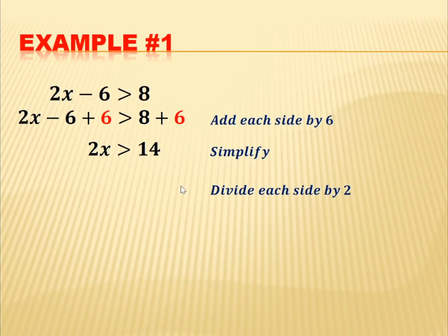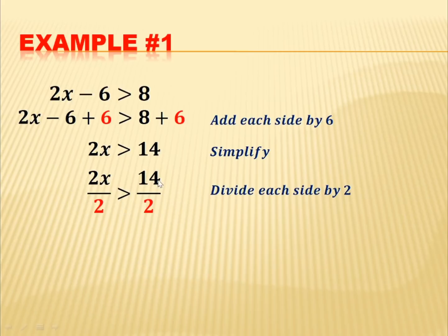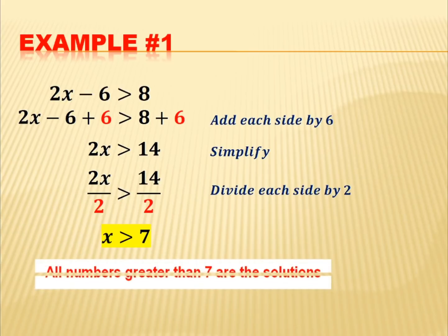Divide each side by 2 to eliminate the coefficient. Canceling the 2, we get x is greater than 14 divided by 2, which equals 7. So x is greater than 7. All numbers greater than 7 are the solutions of this inequality, but 7 itself is not included.